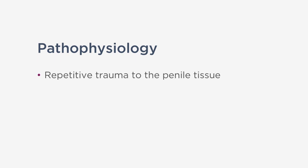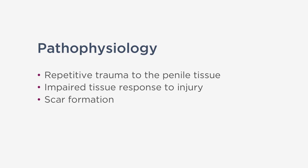How does Peyronie's disease occur? It's believed to result from repetitive trauma to the penile tissue. When patients experience this trauma, there is an impaired tissue response to the injury, forming a scar, which causes penile curvature. The best example I give my patients: if you take a long balloon, put a piece of duct tape on it, and blow it up, it will curve in the direction of the duct tape. Some treatment options involve removing the duct tape or placing an equal piece on the opposite side so the penis is once again straight.